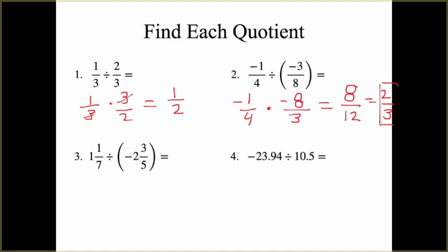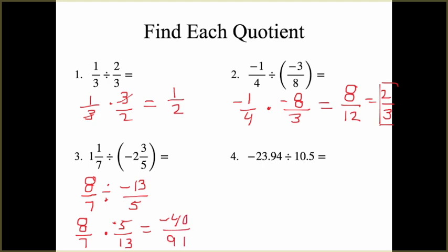For number 3, we have mixed numbers, so the first thing we do is convert them to improper fractions. 1 and 1 seventh: 1 times 7 is 7, plus 1, gives us 8 over 7. Negative 2 and 3 fifths: negative 2 times 5 is negative 10, and negative 10 plus 3 is negative 13, giving us negative 13 fifths. Division becomes multiplication by the reciprocal, so we get 8 sevenths times negative 5 thirteenths, which equals negative 40 over 91. This is already in simplest form.